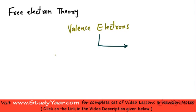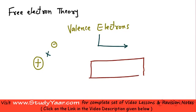Whenever a solid is formed, especially a solid like a metal, these valence electrons detach themselves from the atom. So if this is your nucleus and this is your valence electron, then these valence electrons become free and travel within the solid, and this constitutes your current. These free electrons travel only within the solid because the potential outside the solid for a stationary electron is higher as compared to the potential energy of an electron within the solid.